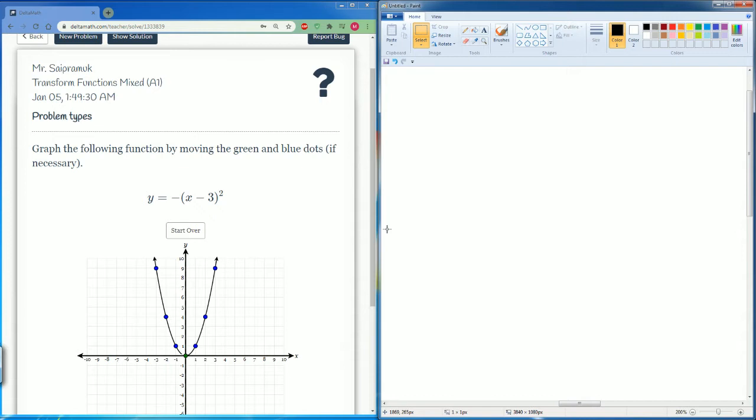We know this can be written in the terms of the vertex form. Vertex form can be expressed as f(x) is equal to an a value in front, (x minus h) squared, plus your k value here.